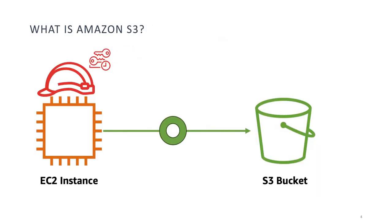What is Amazon S3? Amazon S3, or Simple Storage Service, is an object storage service that provides industry-leading scalability, data availability, security and performance. You can use S3 to store and retrieve any amount of data at any time and from anywhere on the web.